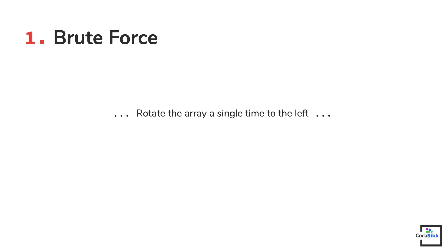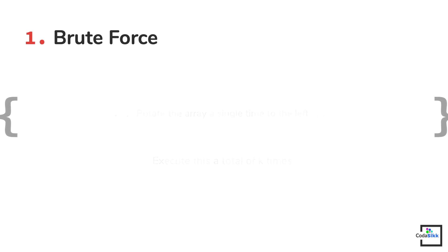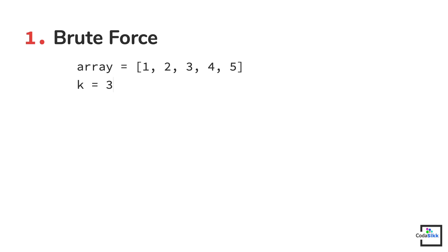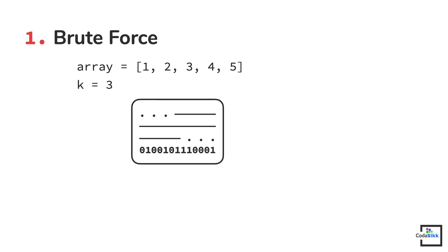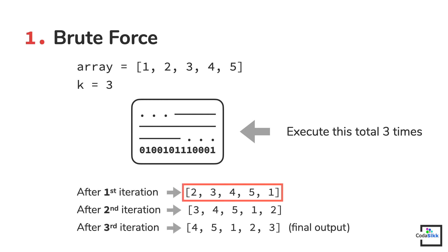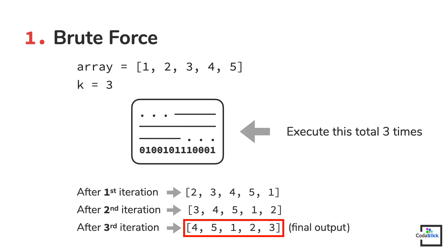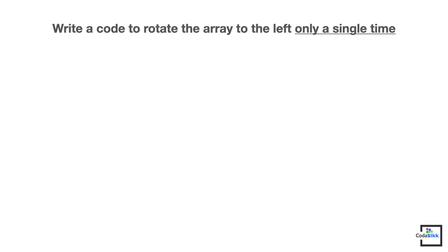The first algorithm that will pop into your mind is the traditional one. We will write some code to rotate the array a single time to the left and then execute this code a total of k times to get the final output. For example, with this array and k equal to 3, we will rotate left once, then again, then a third time, getting our desired output after the last iteration.